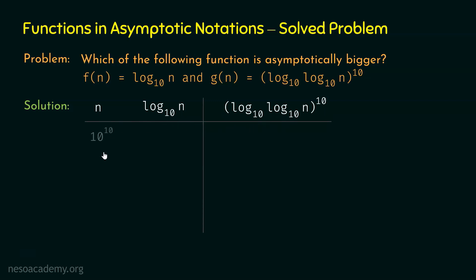Let's take n as 10 to the power 10. If we replace n by 10^10, we get log(10^10) base 10, which equals 10. We know log n base 10 is 10, so we can replace log n base 10 by 10, and we get log 10 base 10, which equals 1.